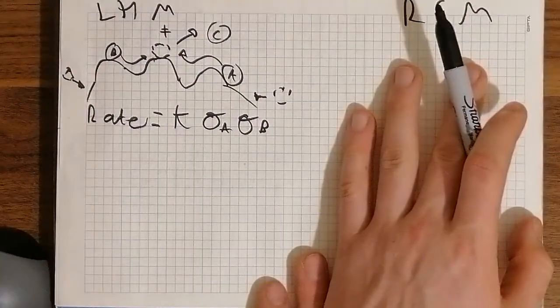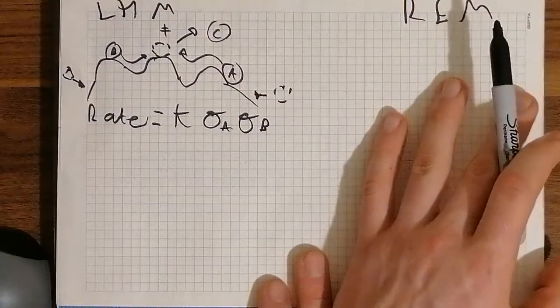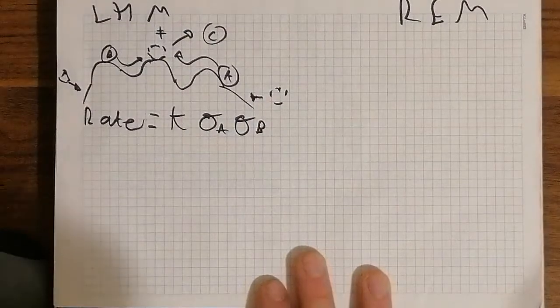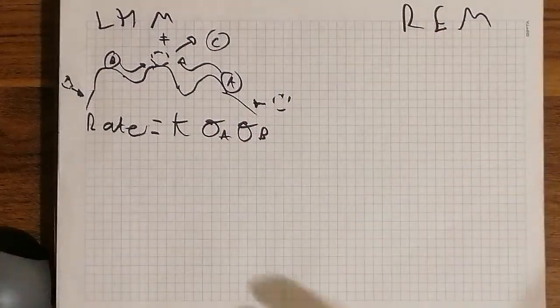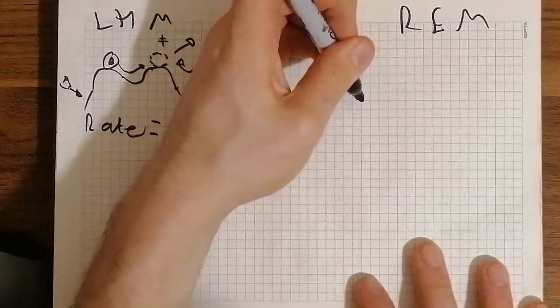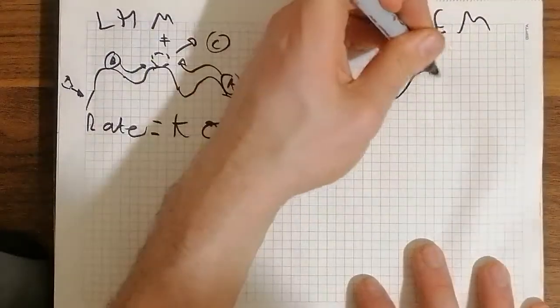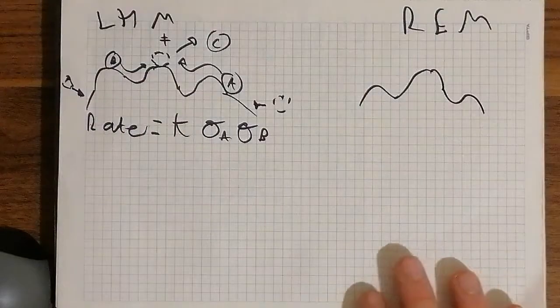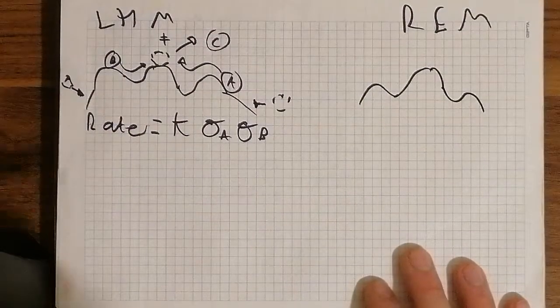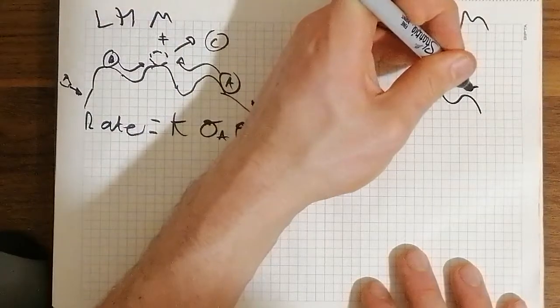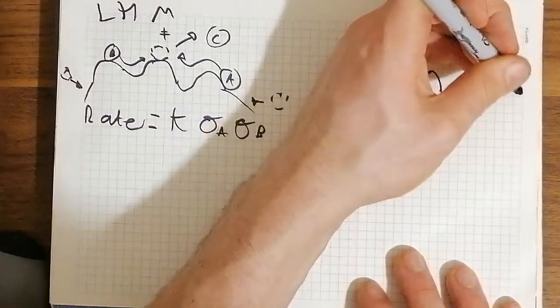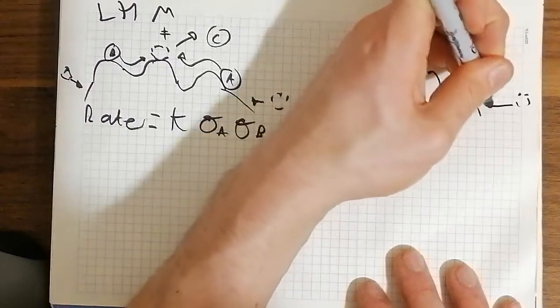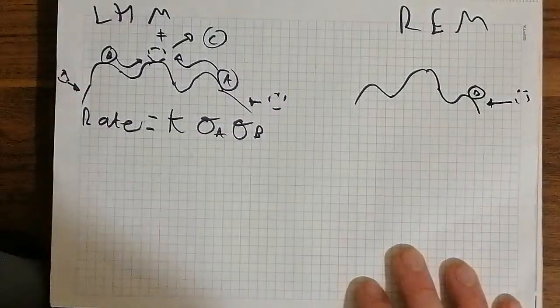So when we do a REM mechanism, one reactant is in the gas phase and one reactant adsorbs on the surface. So let me just draw a picture because words don't make much sense. So one reactant is in the gas phase and one must be adsorbed. So there's got to be something already on the surface. So let's call this D. So D can come in.